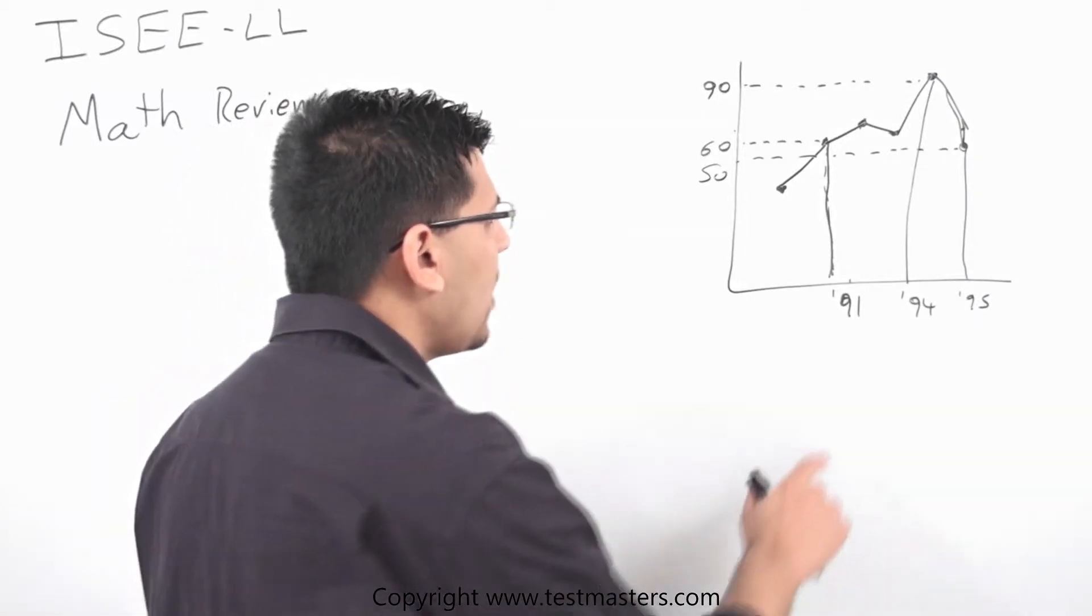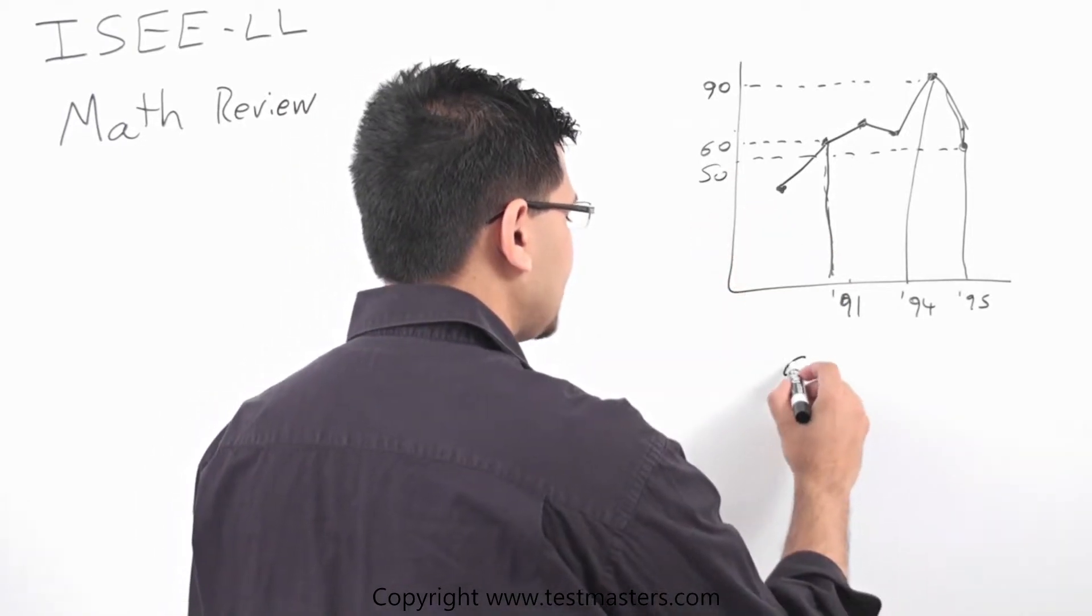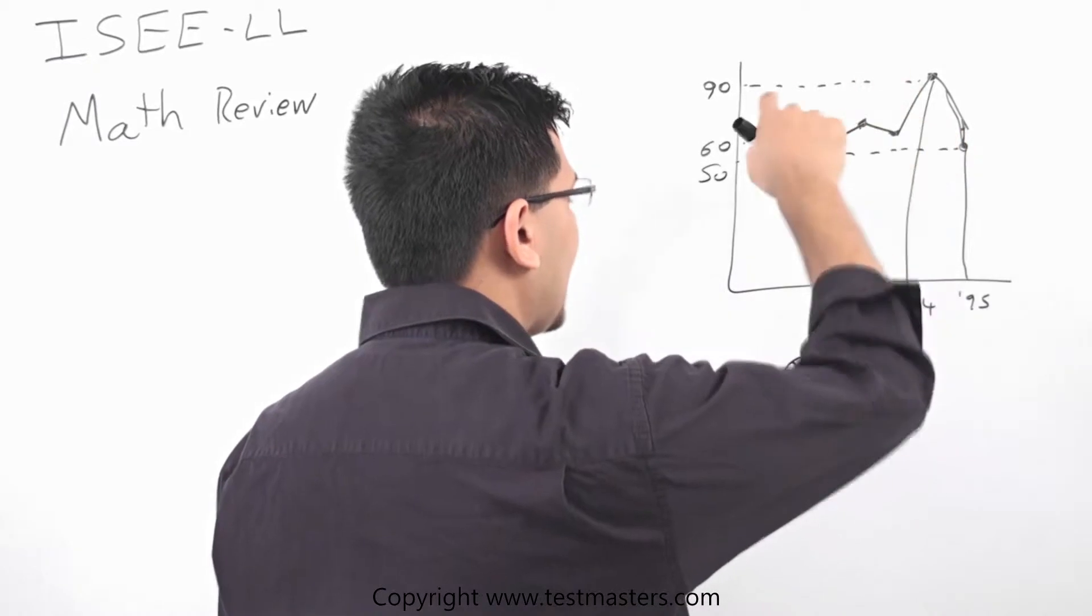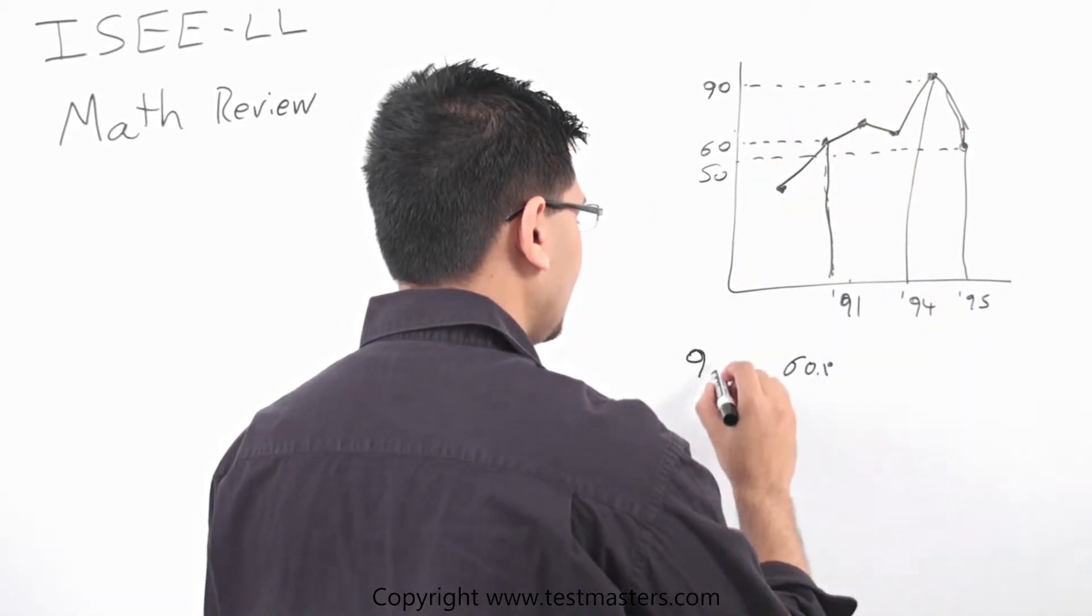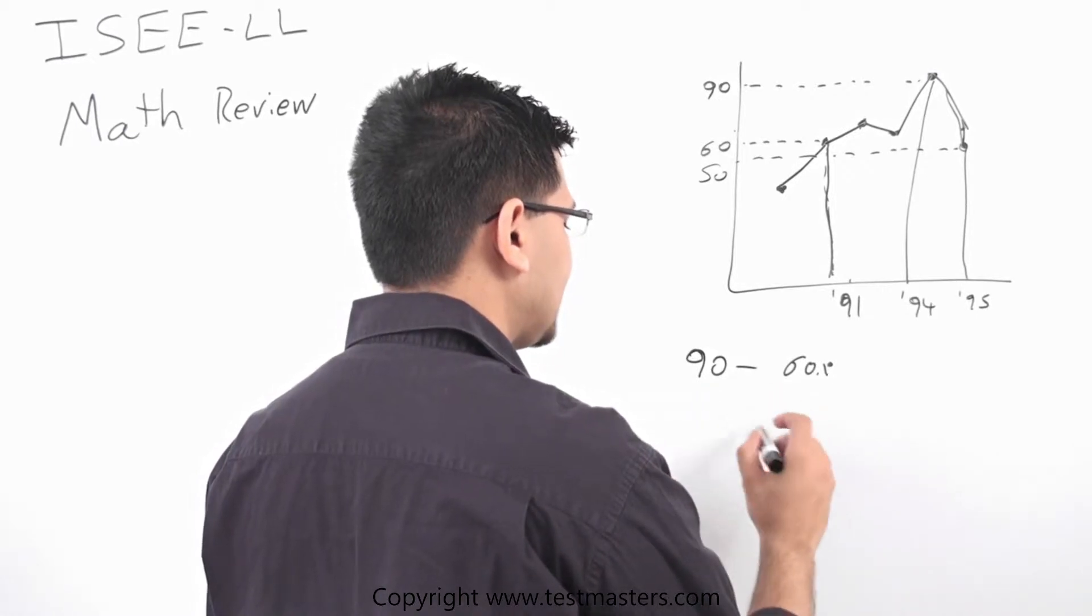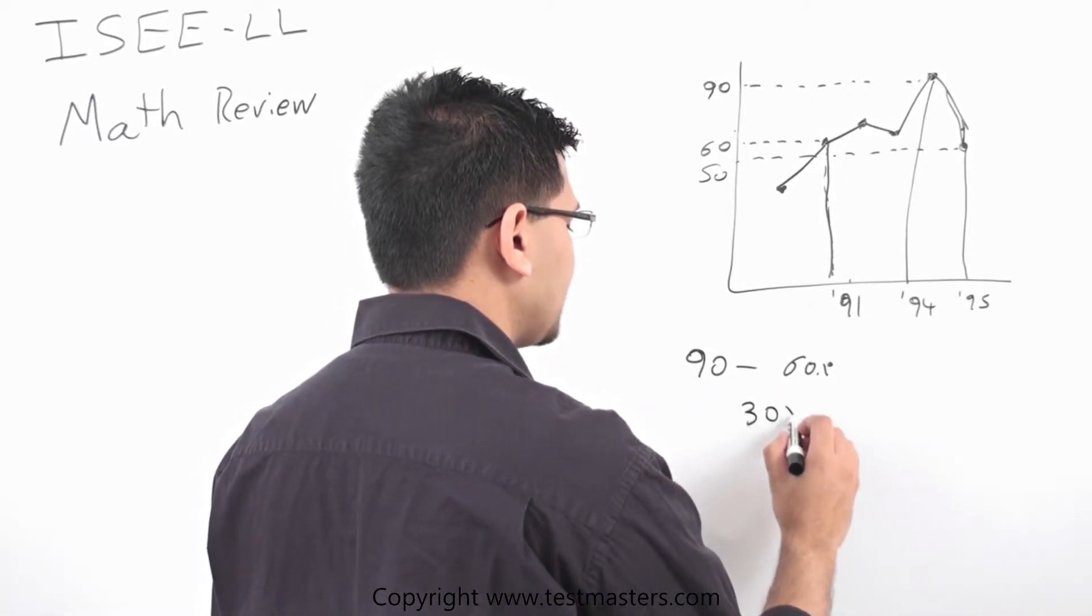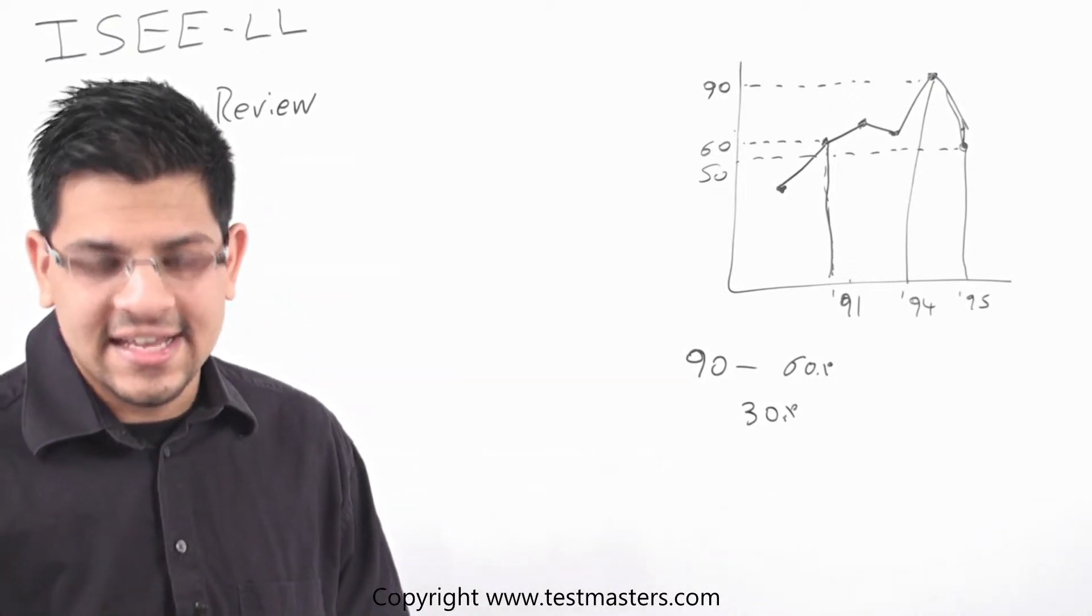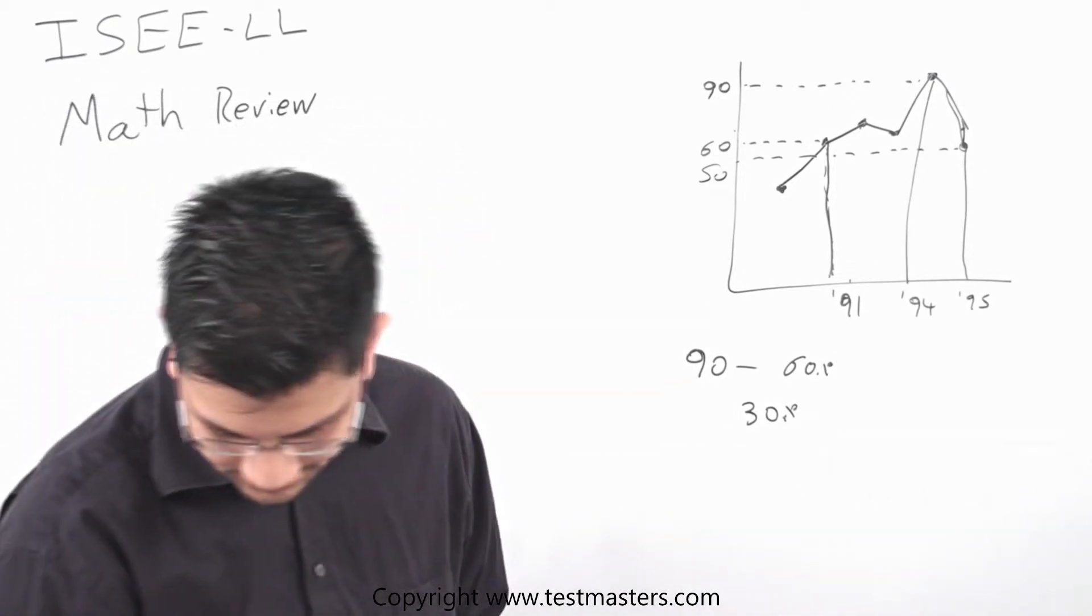Well in 91 he had 60%, right? And in 94 he had 90%, right? So his score increased, his percentage increased, 90 minus 60 is 30%, okay? That was the difference. So the answer is C as in cat for question number 1, alright?